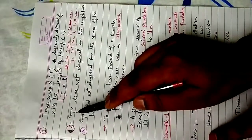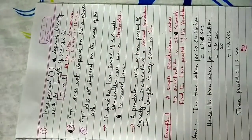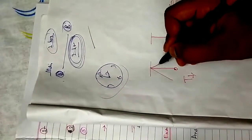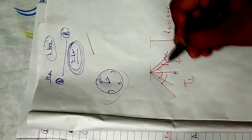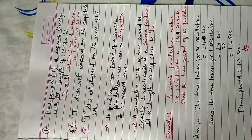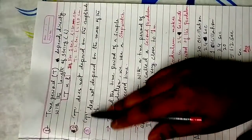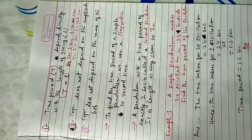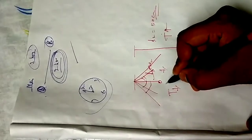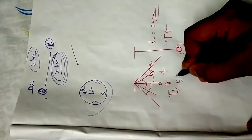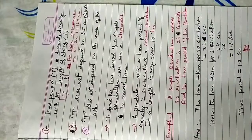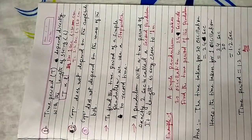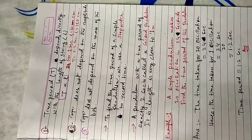Time period does not depend on the amplitude — this angle. It is independent of the amplitude. Number three: time period does not depend on the mass of the bob. If the mass of the bob is 1 gram or 5 grams, it does not depend. Time period depends only on the length of the string. If the question asks whether time period depends on the mass of the ball, the answer is false.